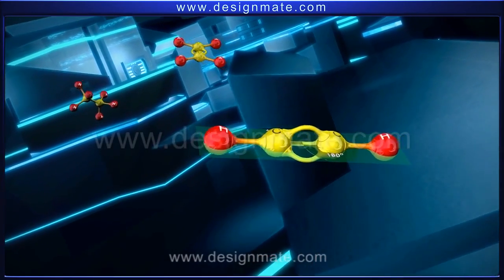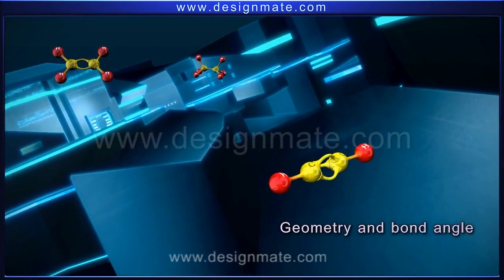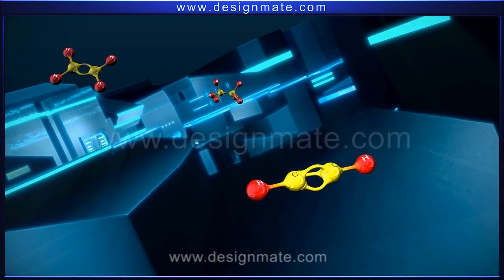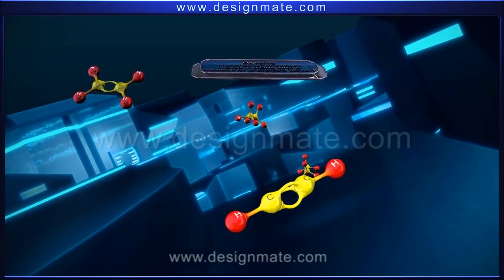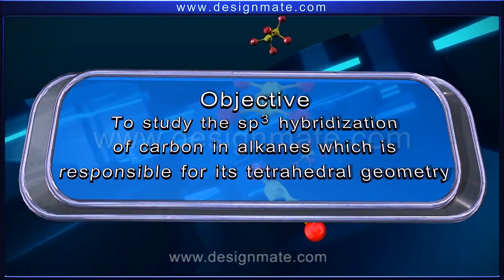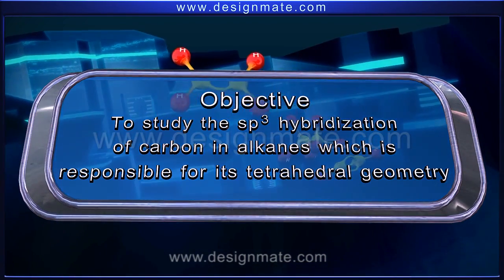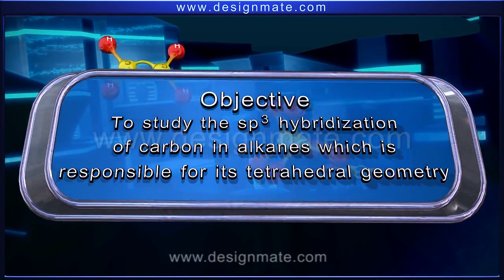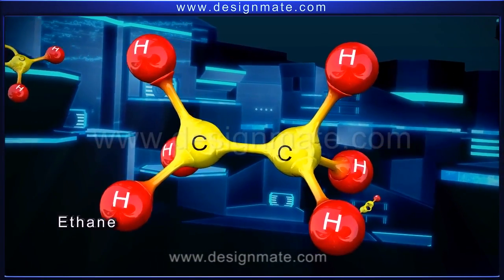All these three hydrocarbons differ from each other in geometry and bond angle due to a difference in the state of hybridization of carbon atom in them. In this topic, we will study the sp3 hybridization of carbon in alkanes and how it is responsible for its tetrahedral geometry. We will explain it by taking ethane as an example.